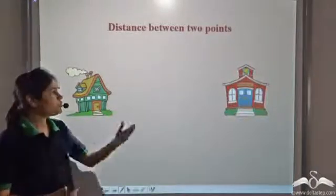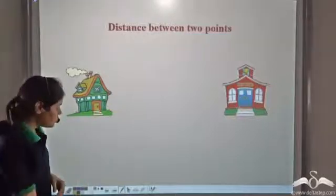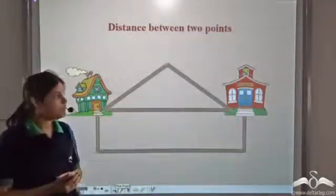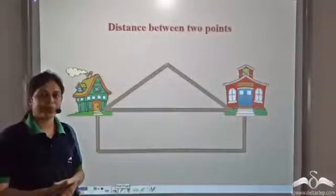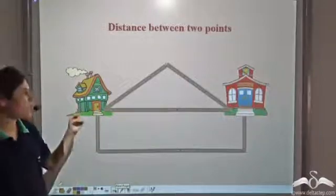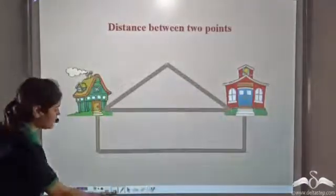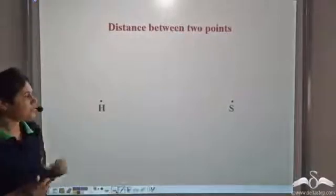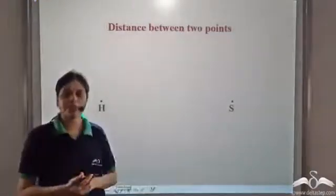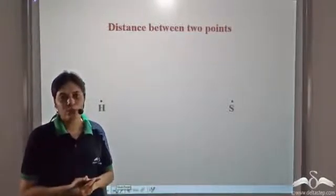Say you want to go to school from your house. There are three roads connecting your house to your school, so which route should you take? Let us consider your house as a point H and school as a point S. So we have these two points, point H and point S. Now what is the distance between these two points?